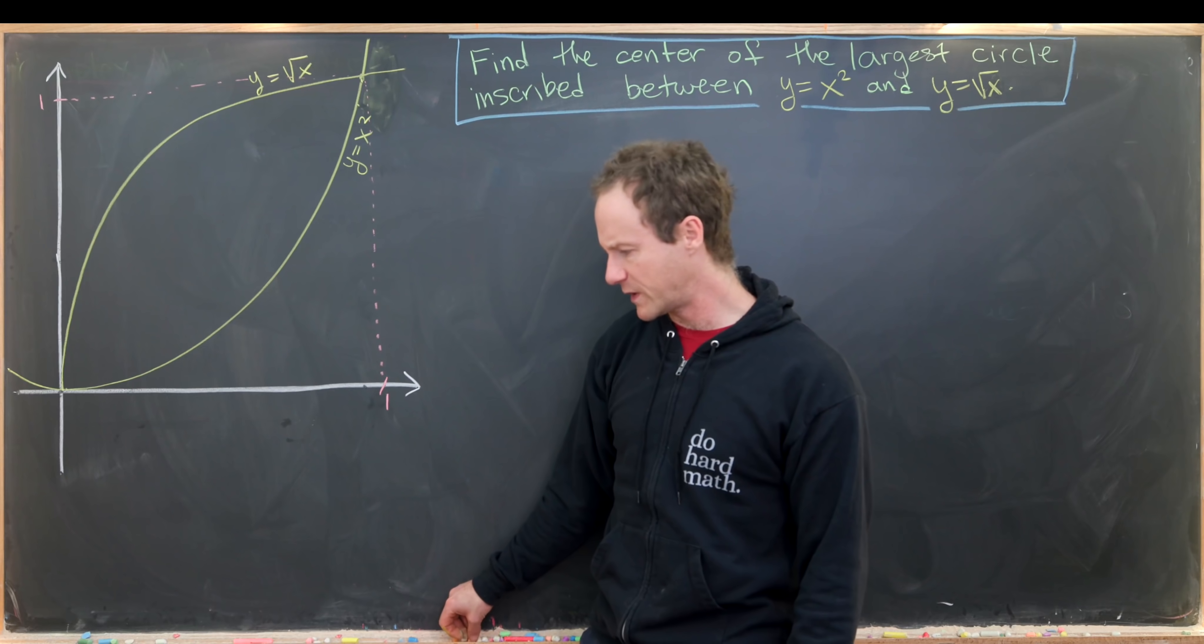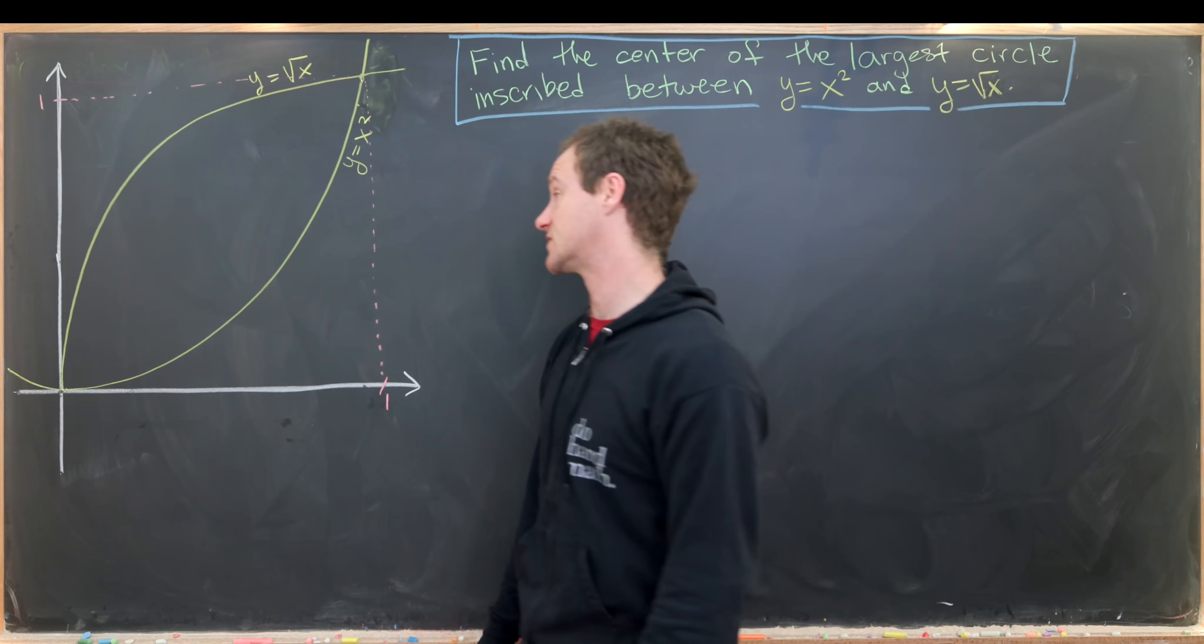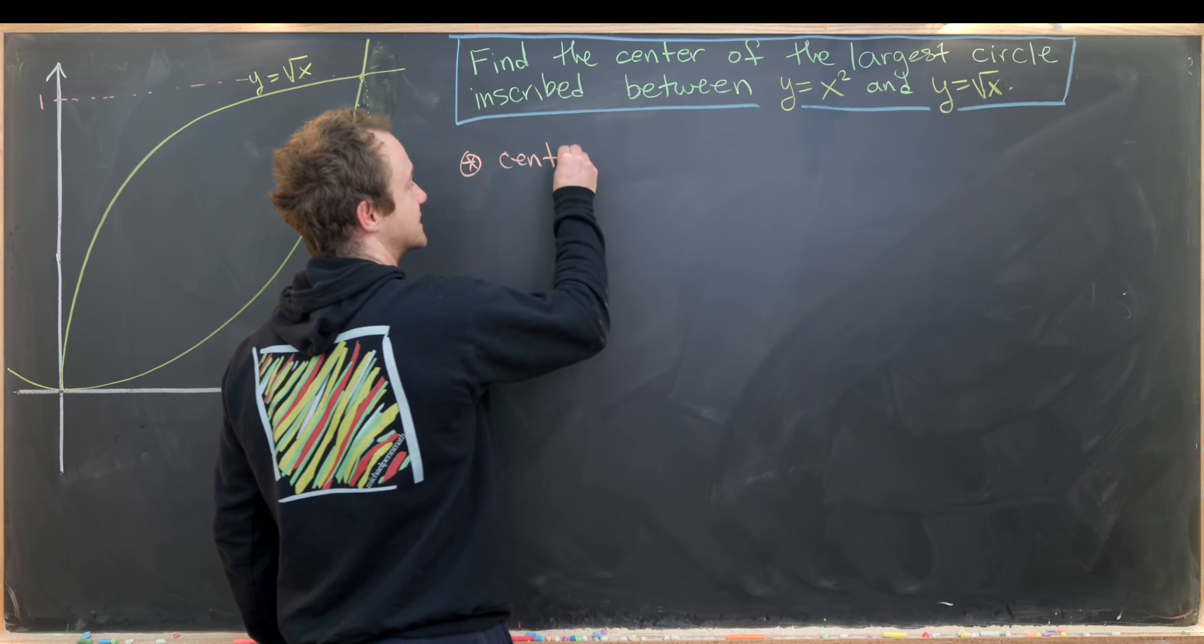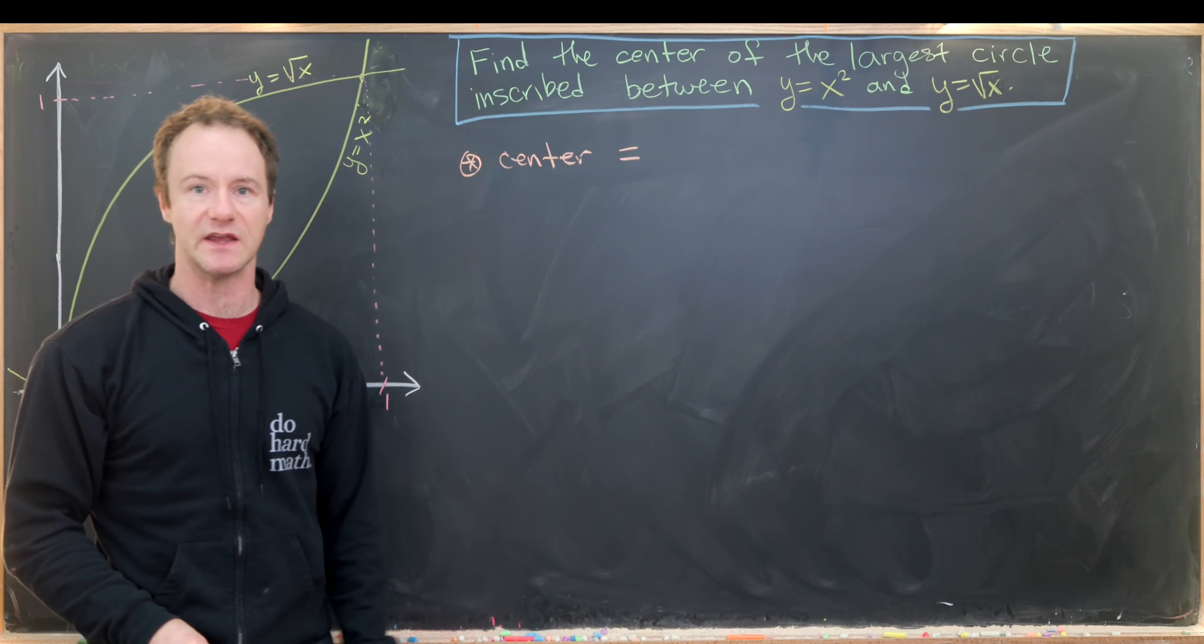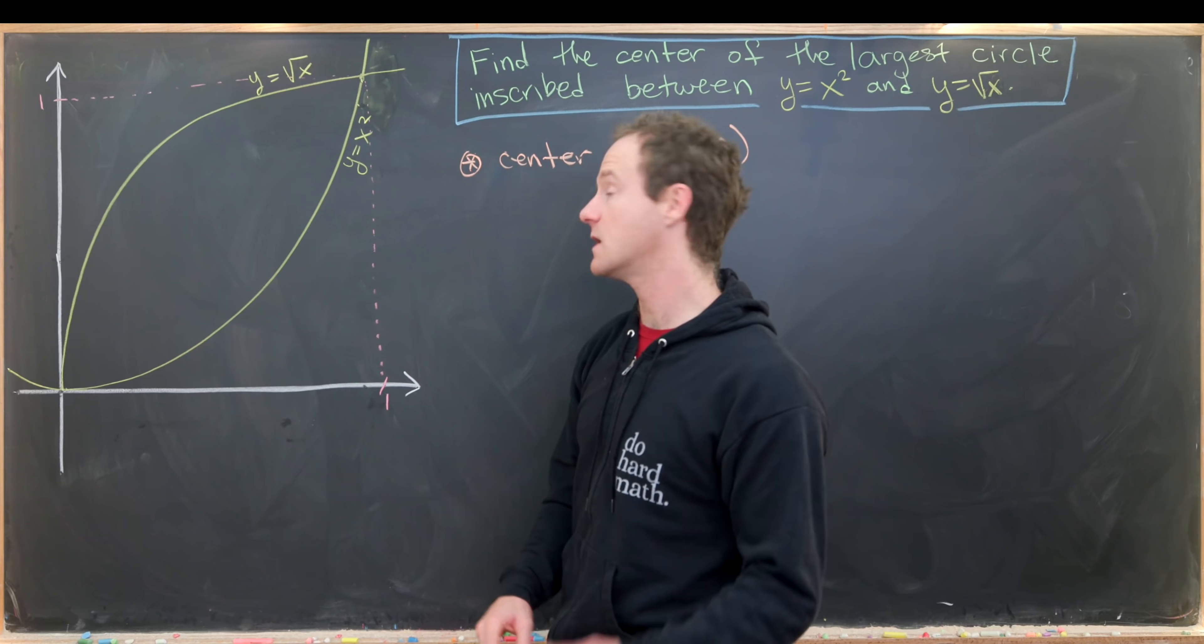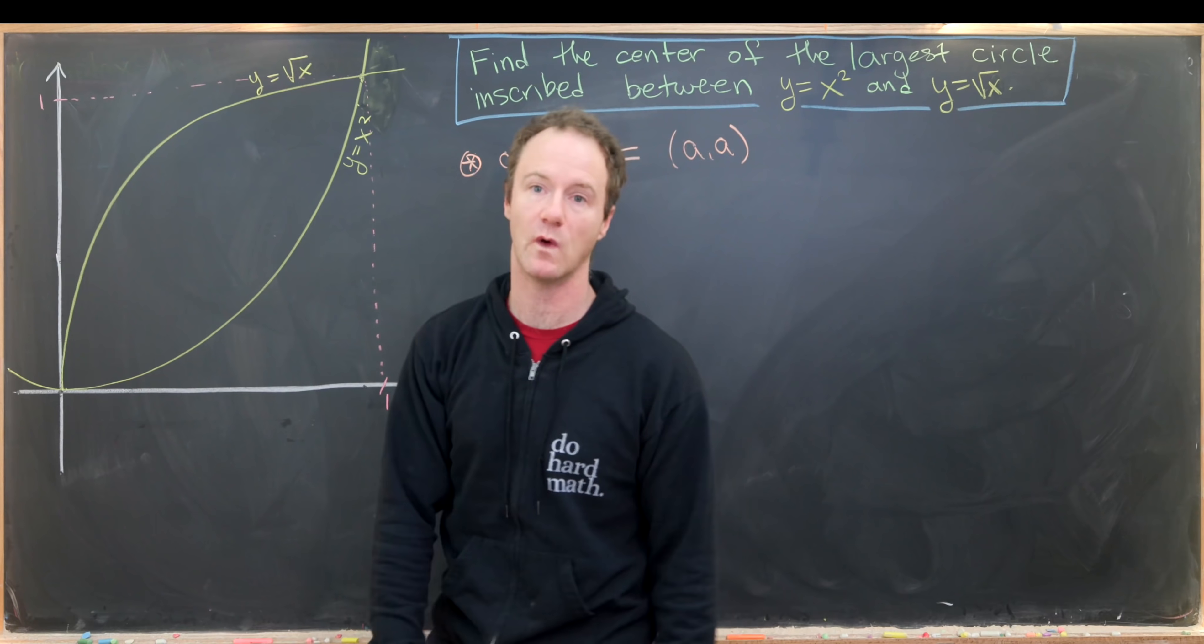Before we get going with the calculation, let's make some symmetry arguments. First off, by symmetry we know that the center of this circle will be on the line y equals x, so it will be of the form a comma a. That comes from the fact that this picture is symmetric about the line y equals x.